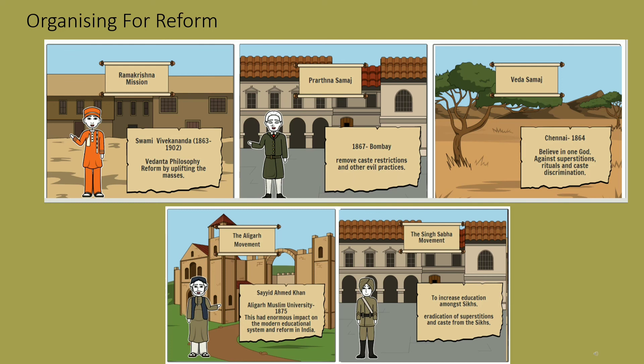Sayyid Ahmad Khan in 1875 founded the Mohammedan Anglo-Oriental College, now known as Aligarh Muslim University. It became the symbol of educational reform and this was called the Aligarh movement. Then there was the Singh Sabha movement, where different Sabhas were formed in Amritsar and Lahore. These Sabhas sought to rid Sikhism of superstitions and caste distinctions, and promoted education amongst the Sikhs.